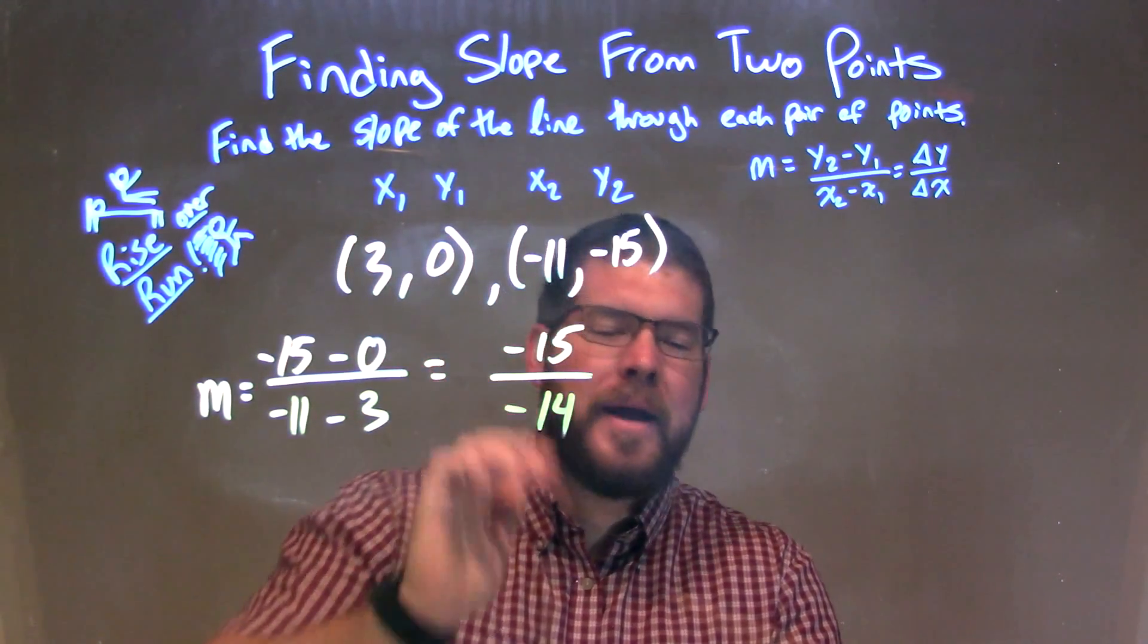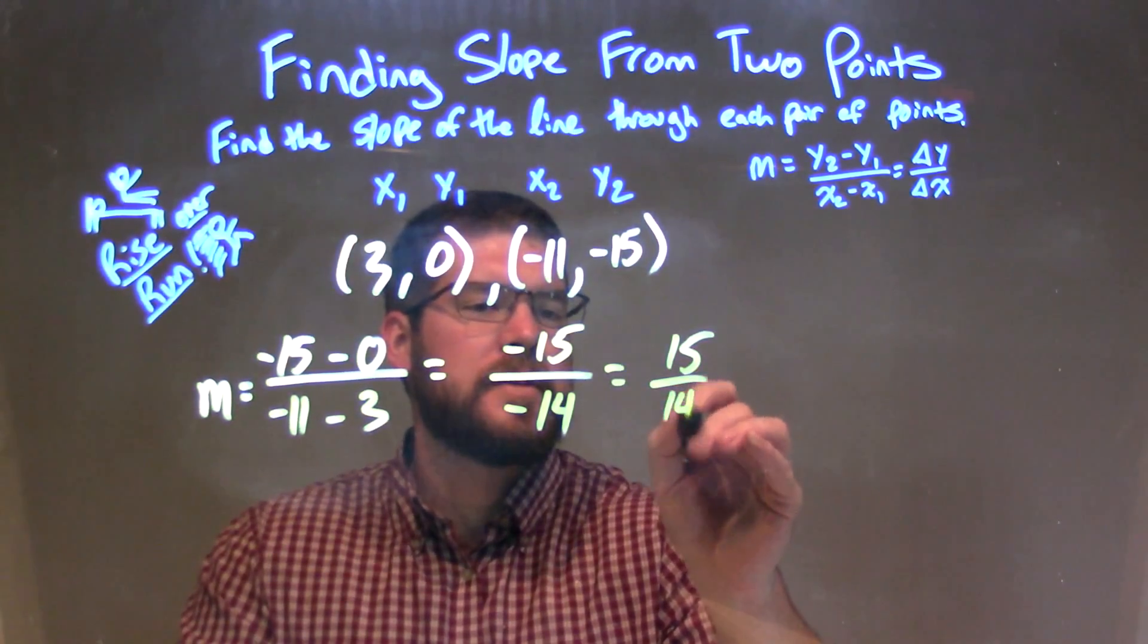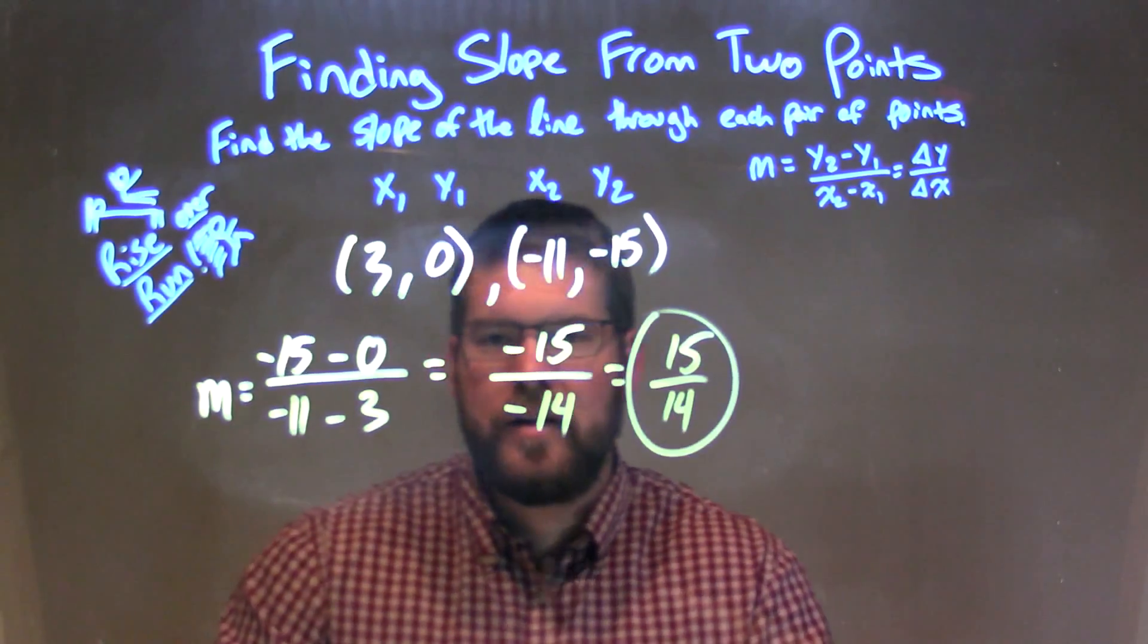Negative divided by negative is a positive number, so we simplify this to be positive. So it's just 15 over 14, and there is our final answer.